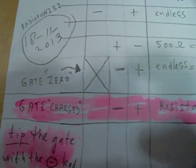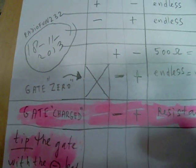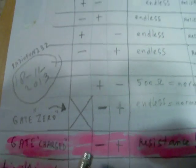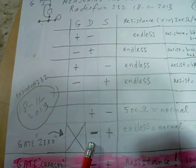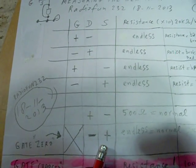And here came a very peculiar phenomenon when I measured it. When you connect the negative from the meter to the drain and the positive to the source, you will see an endless resistance on the meter.